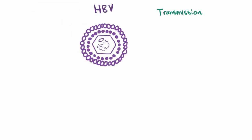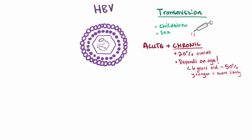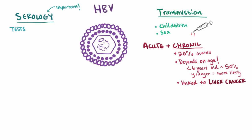On to hepatitis B. HBV is contracted via the blood through the same routes — childbirth, unprotected sex, and others. HBV only moves on to chronic hepatitis in about 20% of cases overall, but it depends on the age of infection. Children under 6 years old are most likely to get chronic infections — about 50% — and that percentage increases the younger they are. Chronic HBV is also linked to liver cancer. We can use a variety of testing methods, including PCR, to look for HBV antigens.